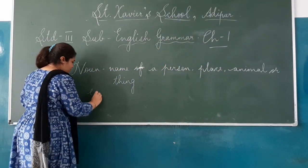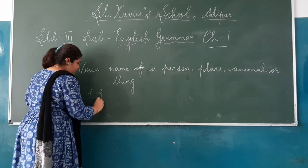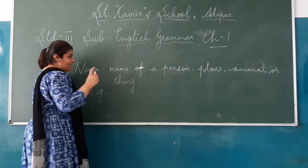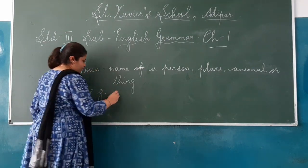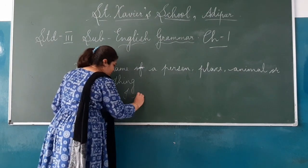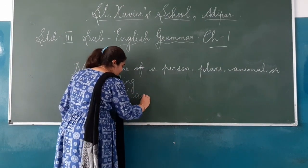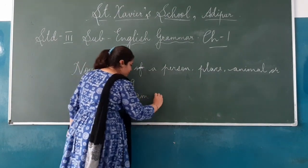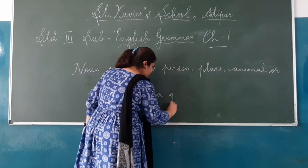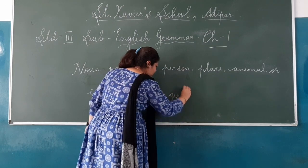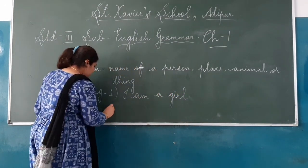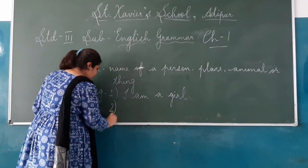Now, examples of a noun will be written. I can say: the first example is — 'I am a girl.' In this sentence, 'girl' is the noun because it is the name of a person.